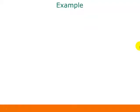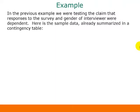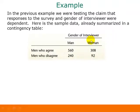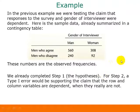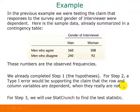Let's go back to our example about responses to the survey question and the gender of the interviewer. Here's sample data already summarized in a contingency table: the gender of the interviewer (man or woman), and the men surveyed who agreed or disagreed with the question. The numbers in this table are observed frequencies. A type one error would be supporting the claim that the row and column variables are dependent when they really are not. For step three, we'll use StatCrunch to find the test statistic.